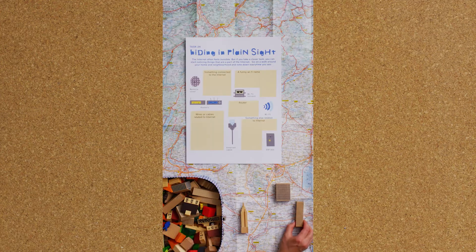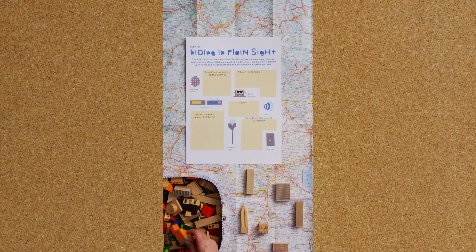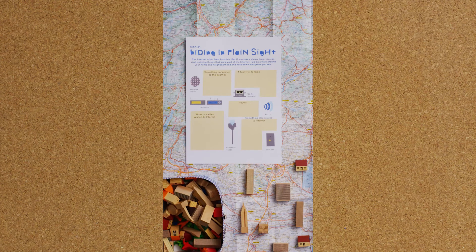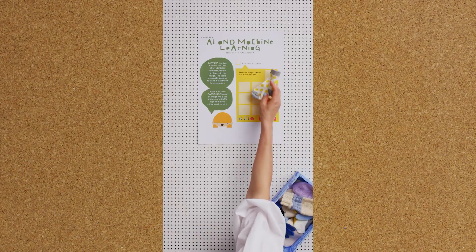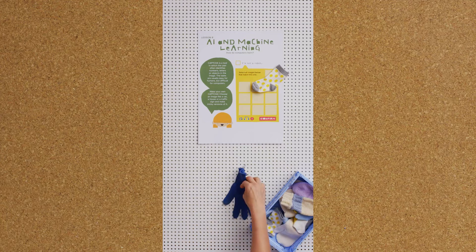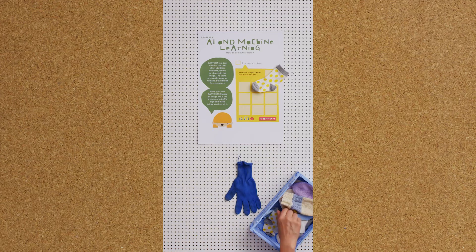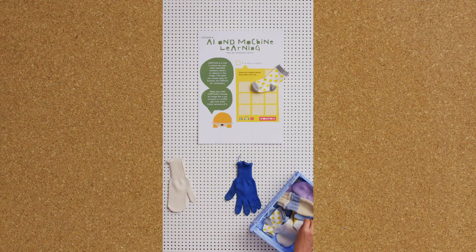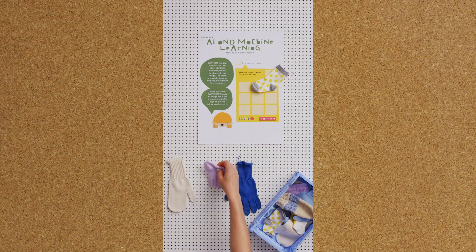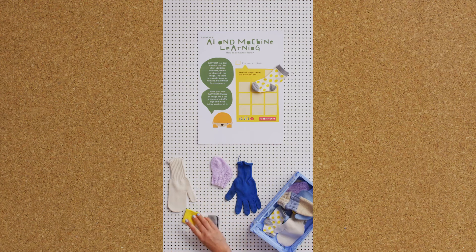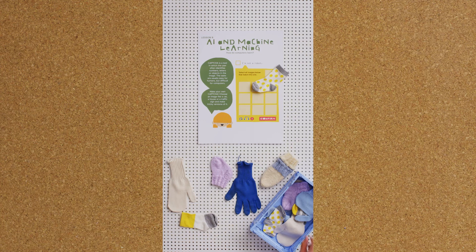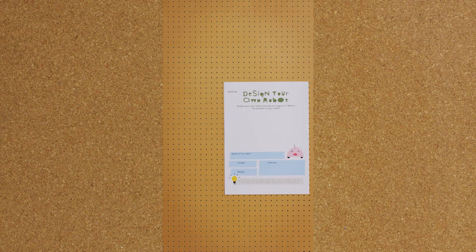The internet is not owned by any one company or person. We are all building it. Computers learn through looking at lots of examples of data. This is called machine learning. Training data can be made up of pictures, texts, clicks or something else. Computer scientists try to make training data free of bias.